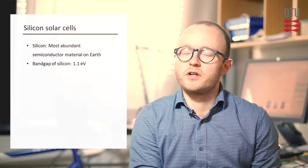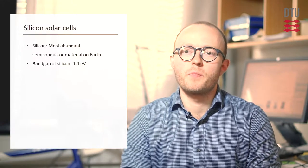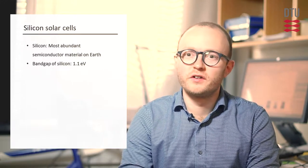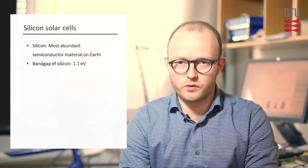Silicon is the most abundant semiconductor material we have available here on Earth. It's the second most abundant material in the Earth's crust after oxygen. So silicon is very abundant and the bandgap of silicon as a semiconductor is quite appropriate for photovoltaics for solar cells.